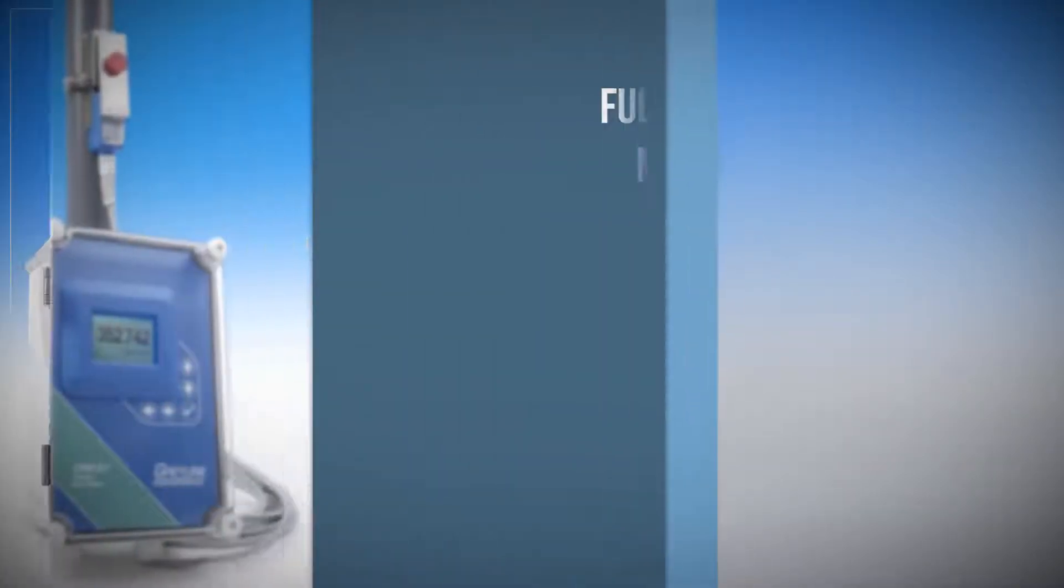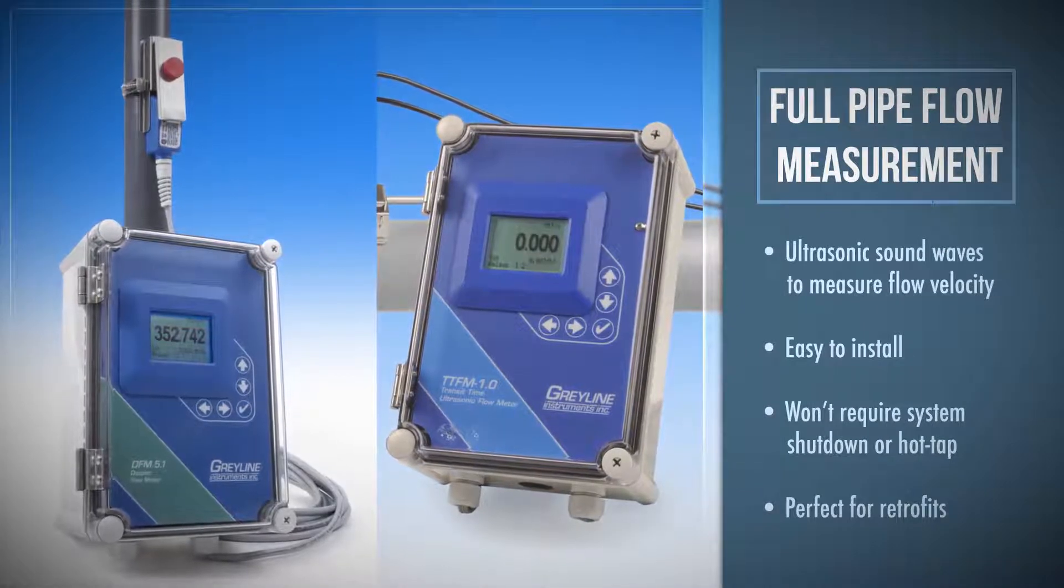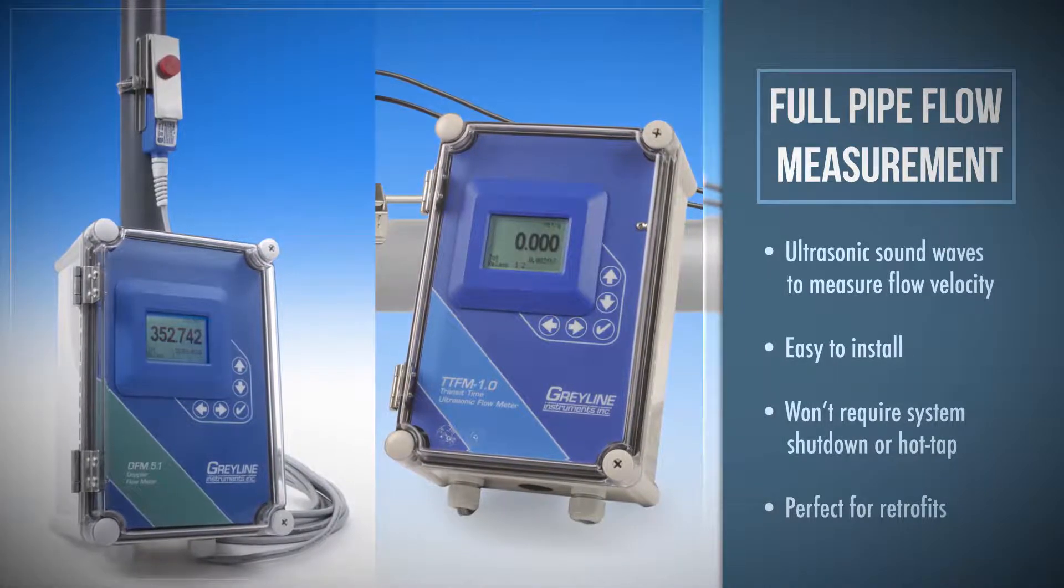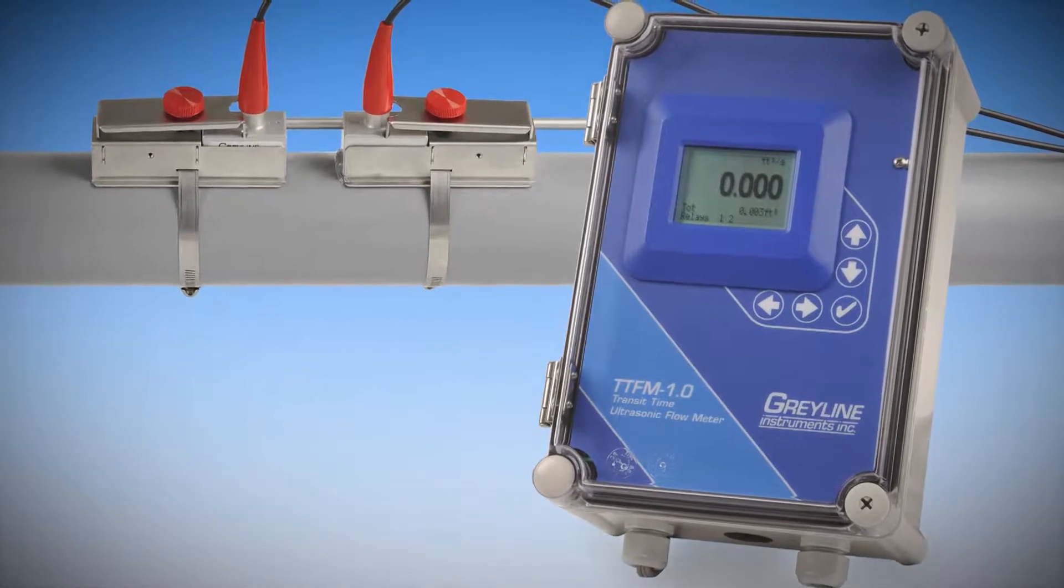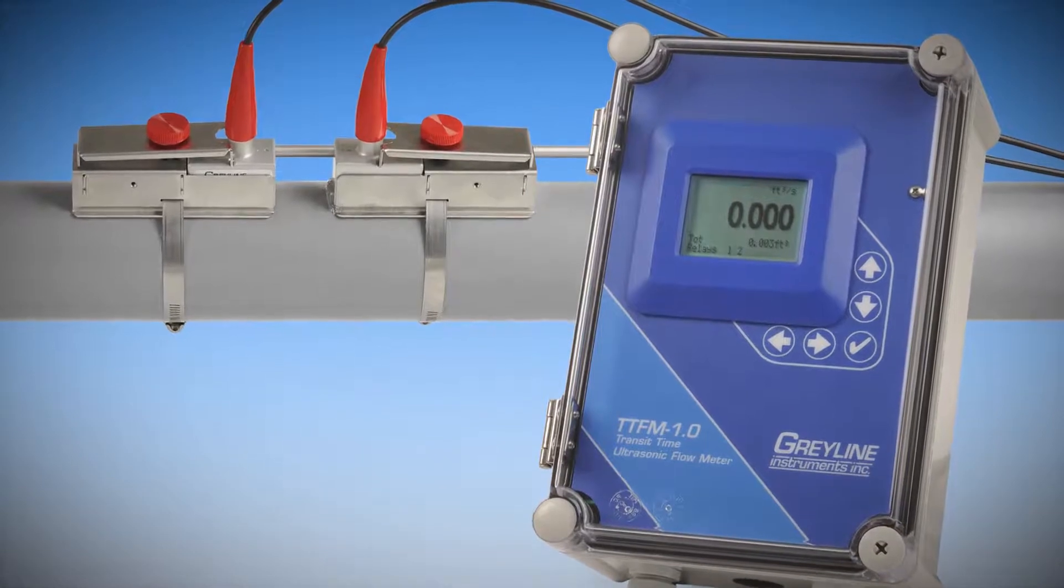Grayline's full pipe flow measurement technologies utilize ultrasonic sound waves to measure flow velocity, meaning that they can be installed from the outside of the pipe. These meters are easy to install, won't require a system shutdown or hot tap, and are perfect for retrofits.